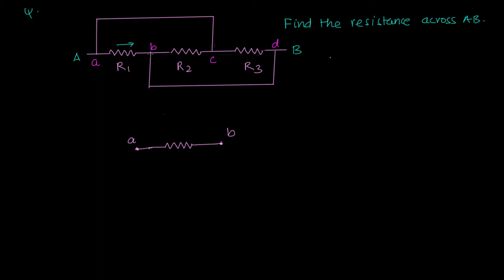R2 is connected between b and c, but since c is shorted with a, c also comes to the same potential as is point a. Do we see that?